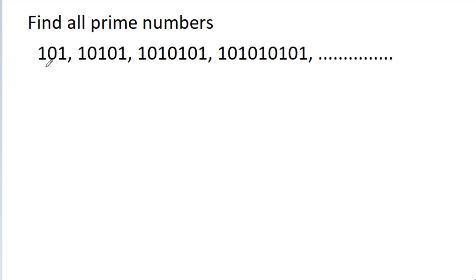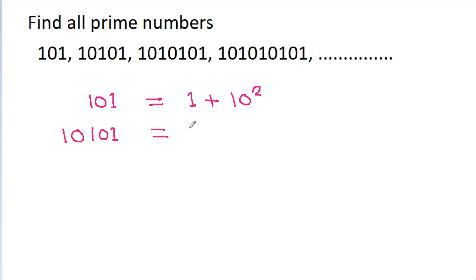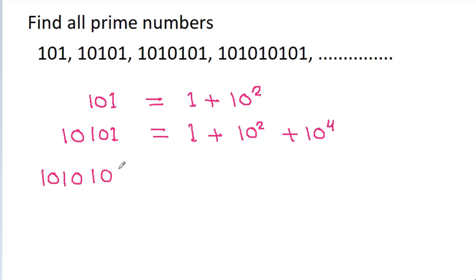The first number is 101, and we can write 101 as 1 plus 100, or 1 plus 10 squared. The next number is 10101, and it is 1 plus 10 squared plus 10 to the power 4. The third number is 1010101, and it is 1 plus 10 squared plus 10 to the power 4 plus 10 to the power 6.